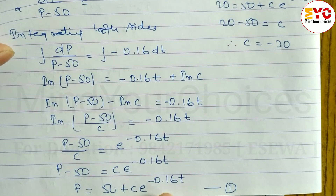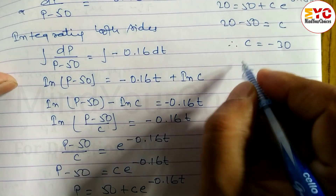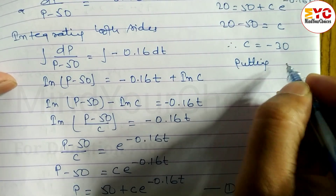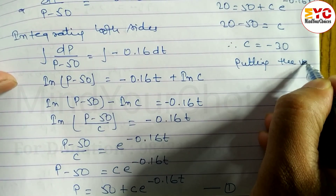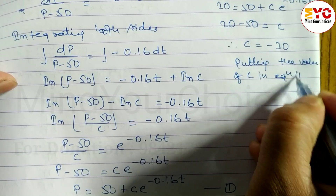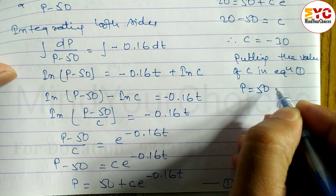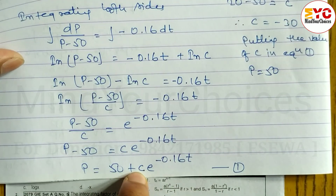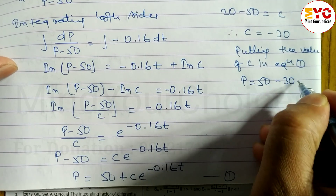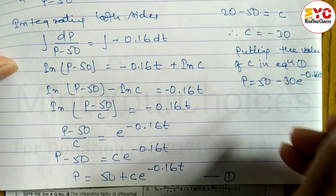Now substitute the value of C into equation one. Putting C equals negative 30 in equation one, we get p equals 50 plus (negative 30) times e to the power of negative 0.16t, which gives p equals 50 minus 30 e to the power of negative 0.16t.